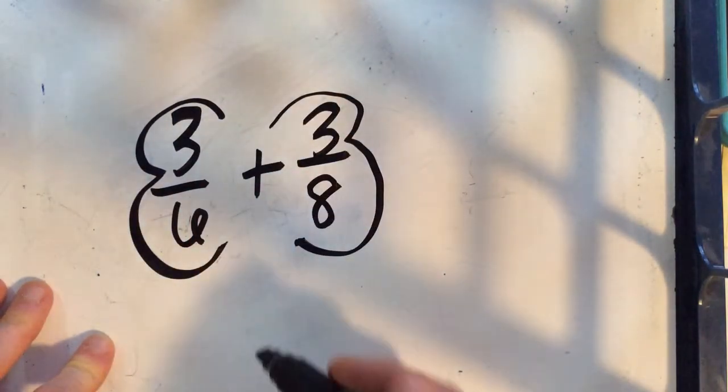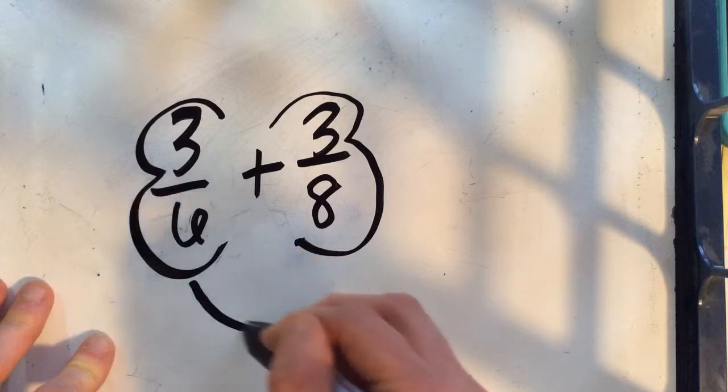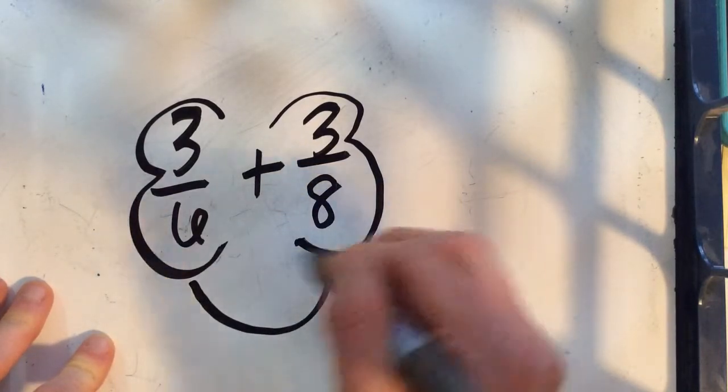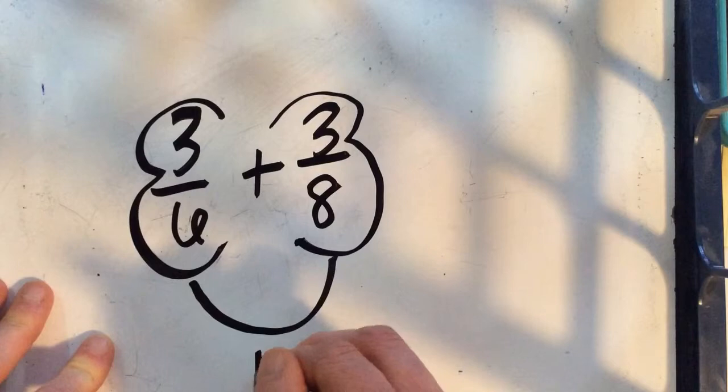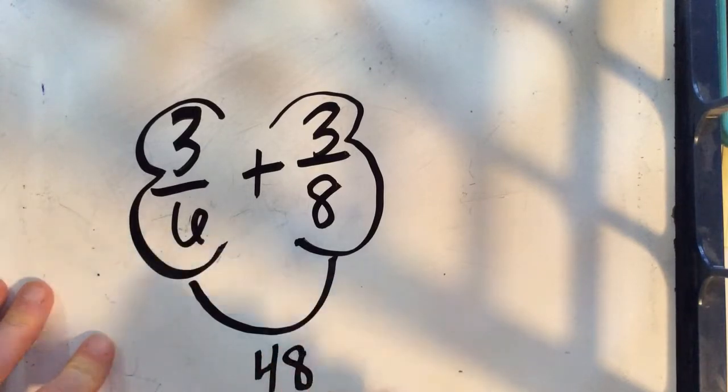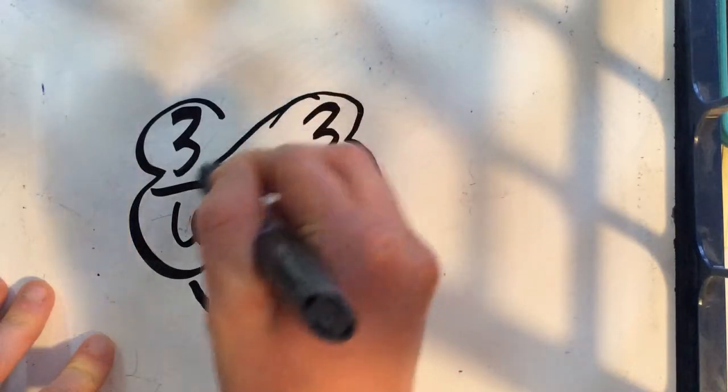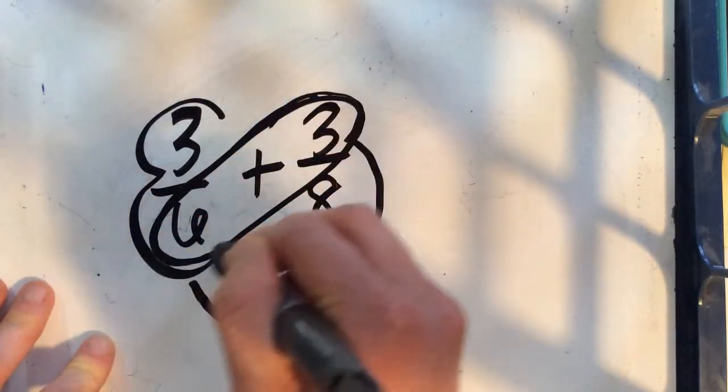And what I'm going to do is I just go ahead and multiply my denominators. So six times eight is 48, and that's going to become our new denominator.